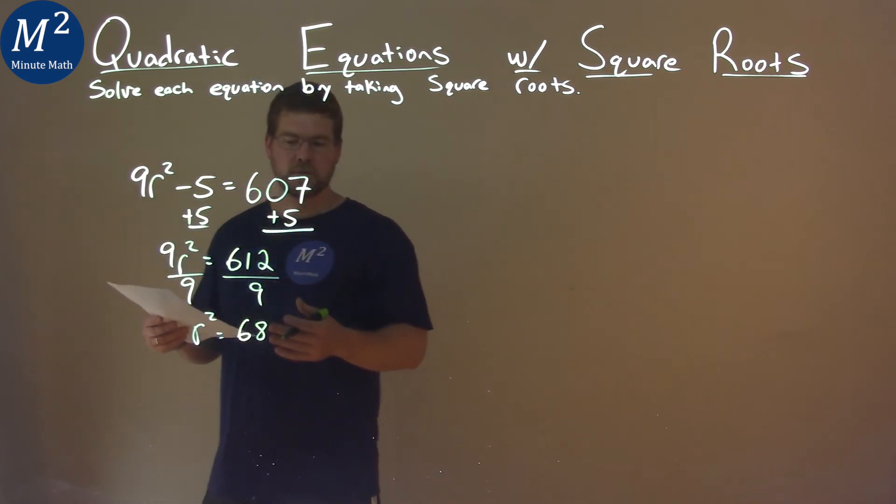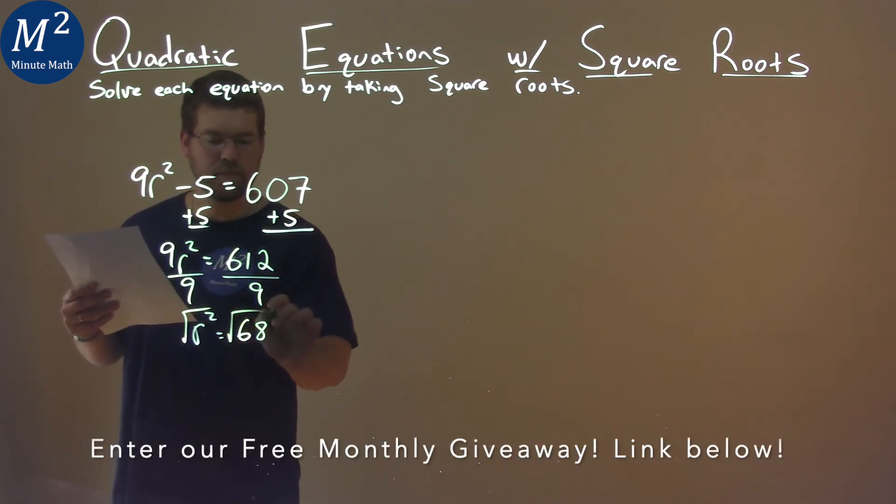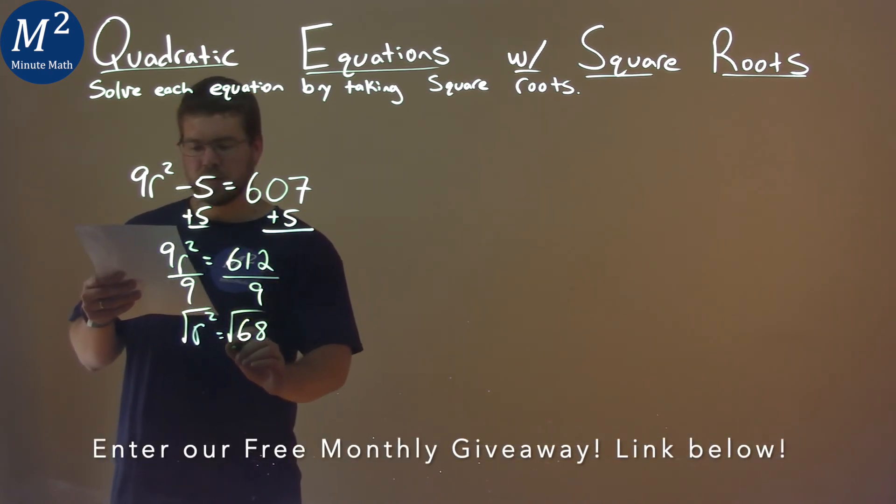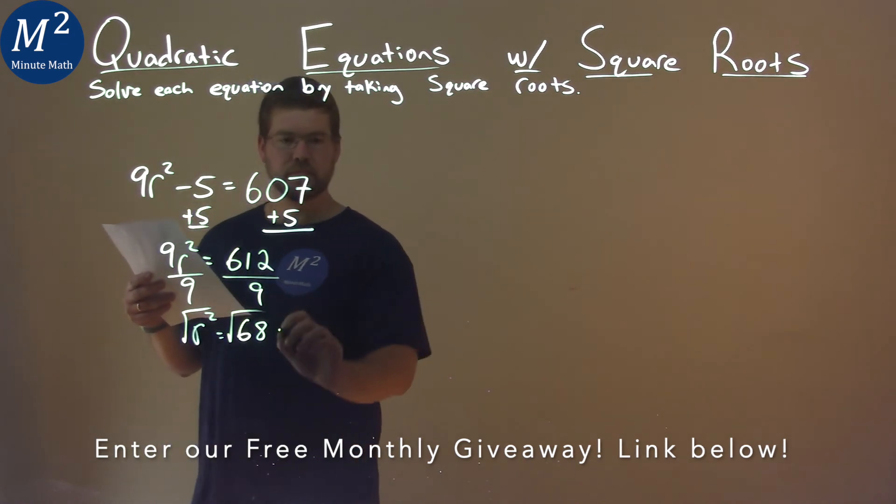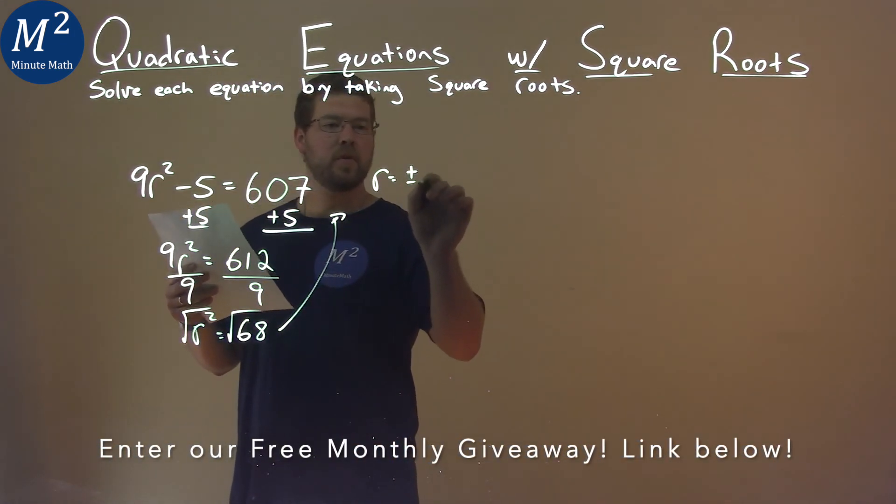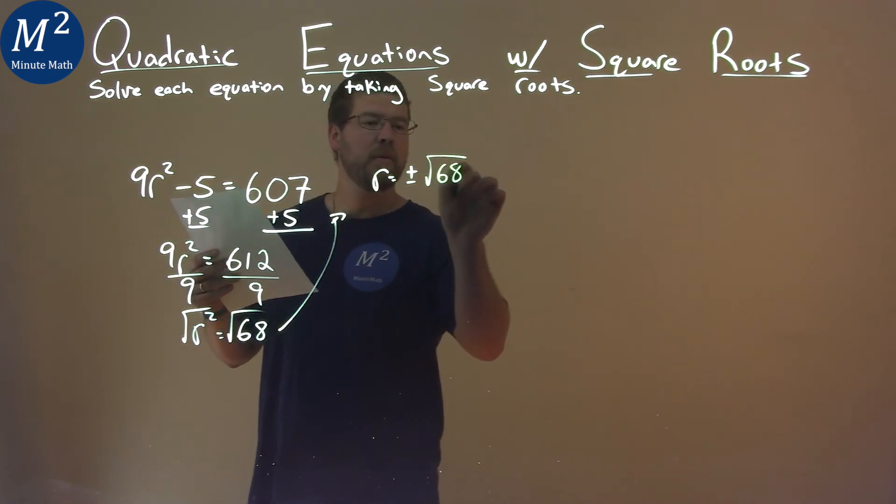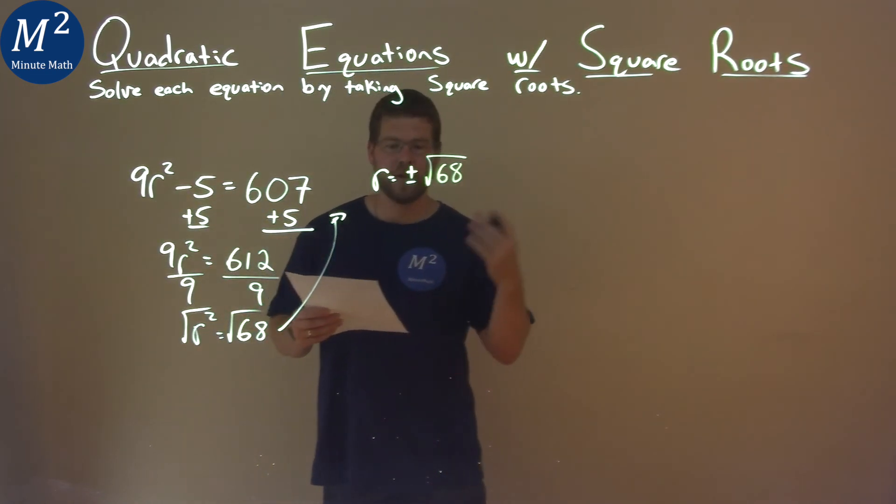So now we have r squared equals 68. Get rid of the squared, take the square root. And so r equals, well I'll put it up here, r by itself equals plus or minus the square root of 68. When we take the square root over an equal sign, we need to make sure it's plus or minus.